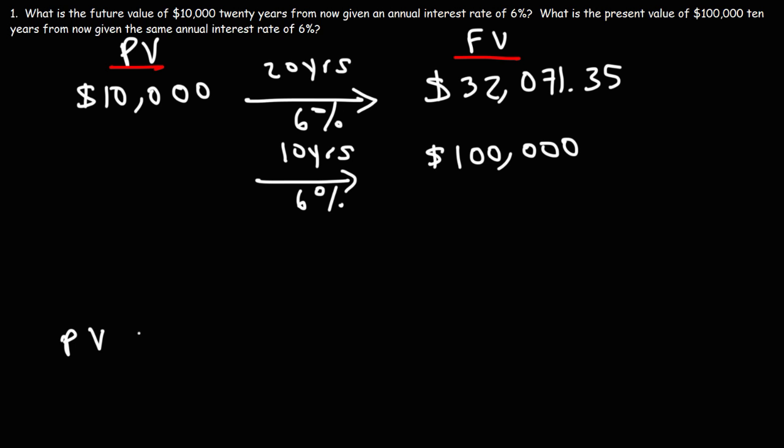So the formula that we need to use, we need to rearrange it a little. The present value is equal to the future value divided by 1 plus r raised to the n.